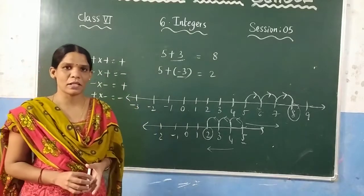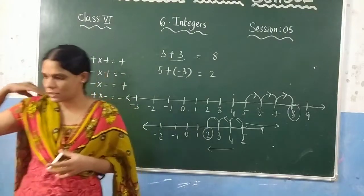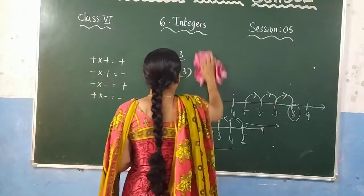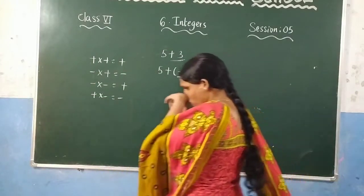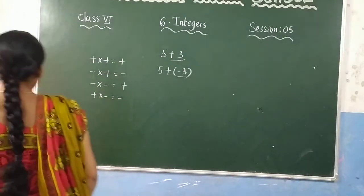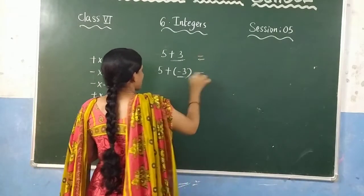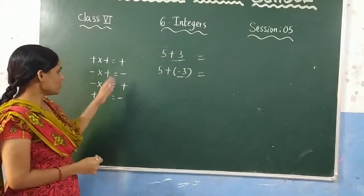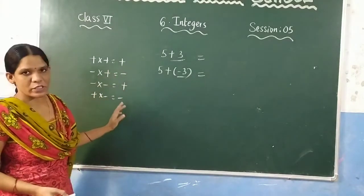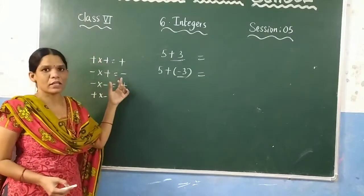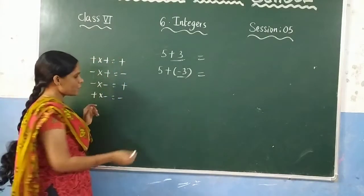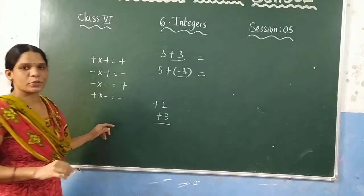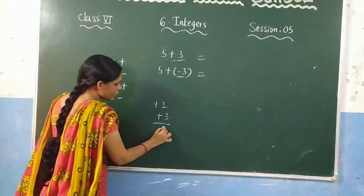Now let us see how to solve the addition of integers without using the number line. If you want to add two integers without the number line, remember: plus into plus is always plus — that means if two numbers both have positive signs, you add them. For example, positive 2 and positive 3: since both are positive, add them to get plus 5.